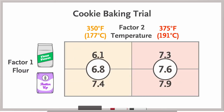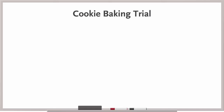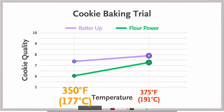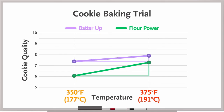Similarly, you calculate the mean scores in both temperature groups and find that the 350-degree cookies have a mean score of 6.8 and the 375-degree cookies have a mean score of 7.6. This also suggests that there is a main effect of baking temperature on cookie quality. So far, we have assumed no interaction between the factors, but this may not be the case. When you graph cookie quality score versus temperature, you see that the batter up cookies are always higher quality than the flour power cookies, and both received higher scores when baked at 375 degrees compared to 350. However, the flour power line has a steeper slope than the batter up line. When batter up cookies were baked at 375 degrees instead of 350, their score went up by half a point. But when the flour power cookies were baked at 375 instead of 350, the score went up by 1.2 points.